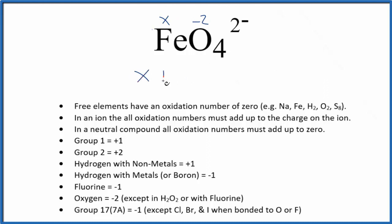X, that's our iron, plus negative 2 times 4, that equals negative 2. So X minus 8 equals negative 2. We add 8 to both sides, and we get X equals positive 6.